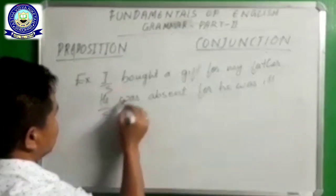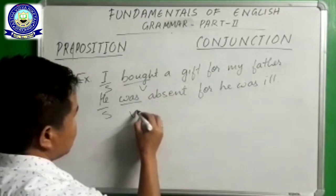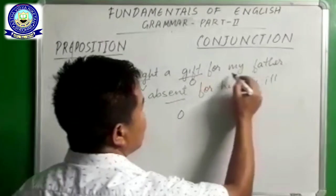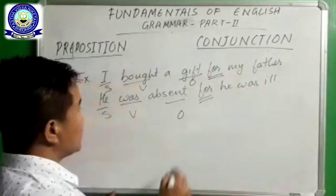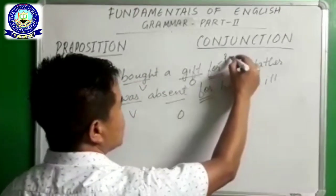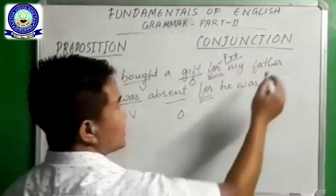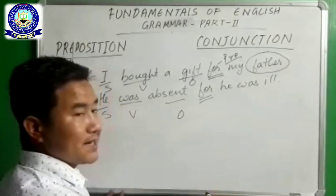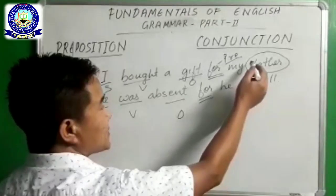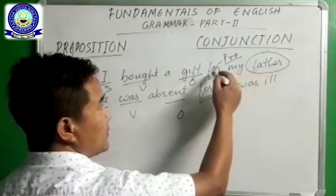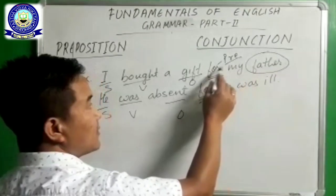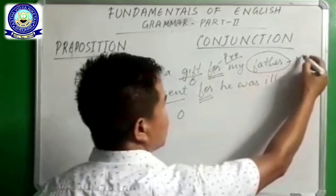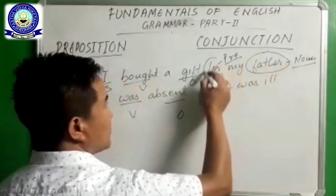In the first sentence, 'for' is working as a preposition. Why? Because father is a noun, and 'for' is placed before the noun 'father.' So 'for' is used before a noun, and therefore this word 'for' becomes a preposition. But in the second sentence, 'for' is working as a conjunction — we have subject and verb in the first clause, and subject and verb in the second clause, so 'for' joins clause to clause.